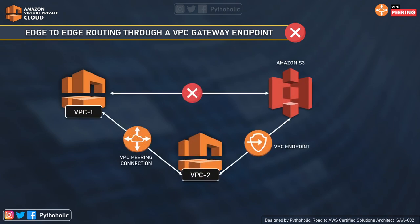One last example: if VPC 1 and VPC 2 are peered, and VPC 2 has a VPC endpoint connecting it to Amazon S3, VPC 1 does not have any endpoint connection to S3. You cannot use VPC 2 to extend the peering relationship to exist between VPC 1 and Amazon S3. Even if VPC 2 has a connection to S3, VPC 1 cannot have edge routing through VPC 2 to access data in S3. These are the clear boundaries of what you can and cannot do with VPC peering.